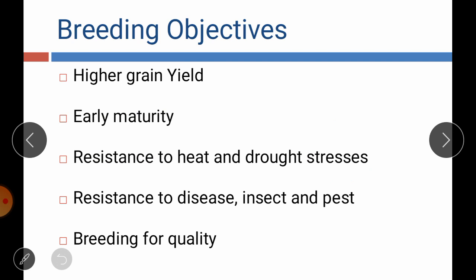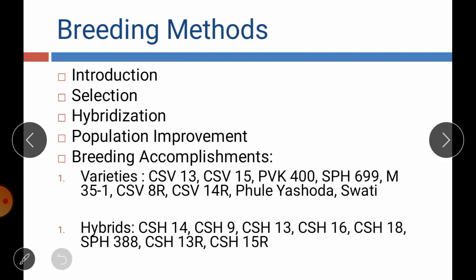Breeding objectives in sorghum include higher grain yield, early maturity, resistance to drought stresses, resistance to diseases and insect pests, and breeding for quality. Breeding methods used include introduction, selection, hybridization, and population improvement.